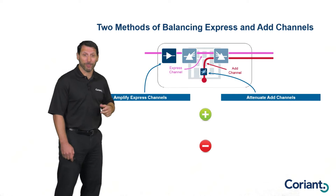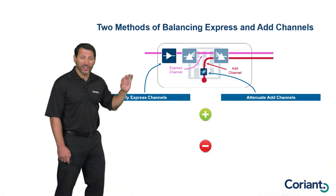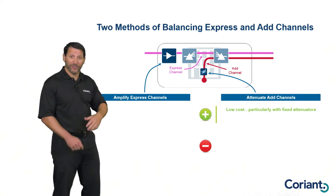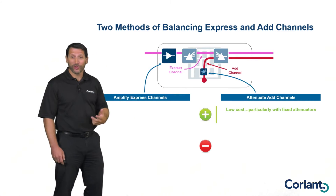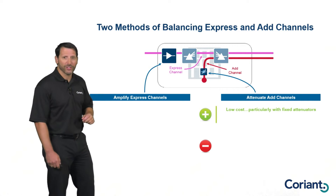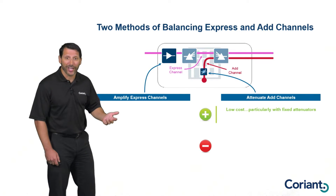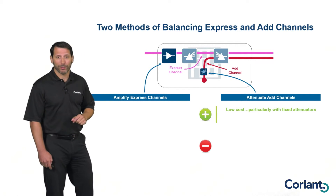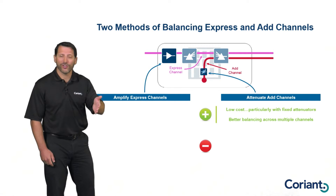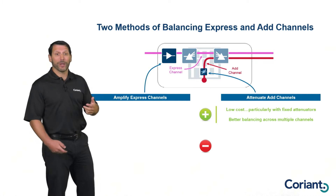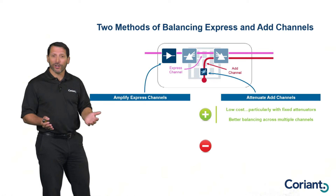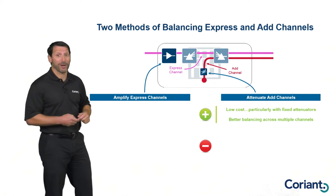Let's look at the attenuation option first. One of the best benefits is that it can be very cost-effective, especially on a per-channel basis — fixed attenuators can be tens of dollars. Even automated attenuators are still relatively cheap per channel, making this an extremely cost-effective option for networks that don't have a lot of wavelengths. Another benefit is that doing this on a per-channel basis lets you fine-tune the attenuation for each individual channel, enabling better power balancing because you can customize it per channel.